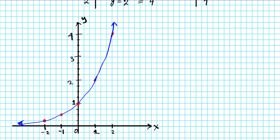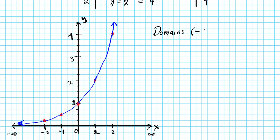Now let's start with the domain and range — the dimensions of our graph. The domain is basically the horizontal span of the graph — how wide does the graph go? We'll be taking a look at the projection of the graph on the x-axis. This graph goes forever in the left direction to negative infinity and forever in the right direction. If you project this graph on the x-axis, it will cover the entire x-axis. So the width of this graph is from negative infinity to positive infinity.